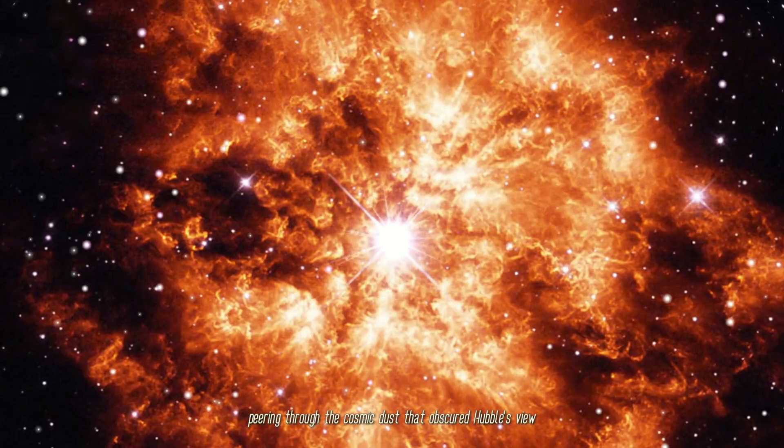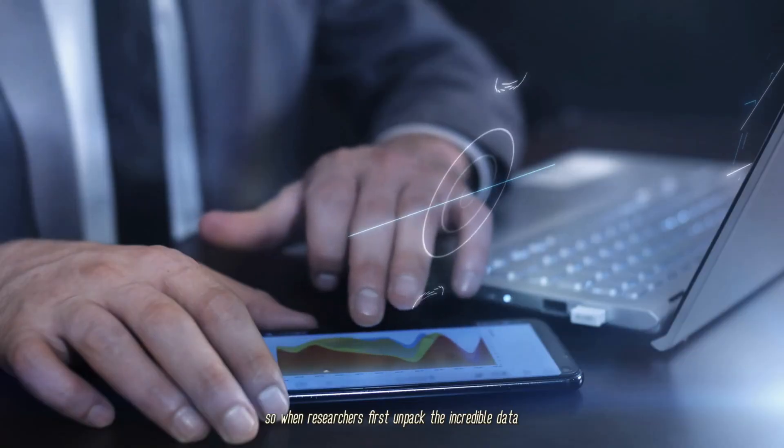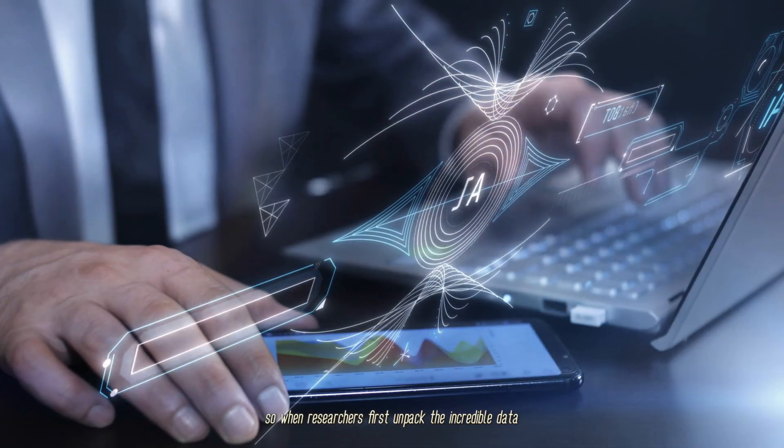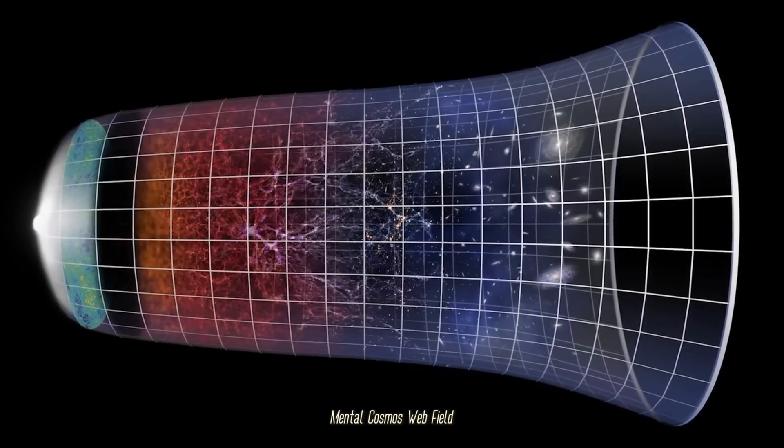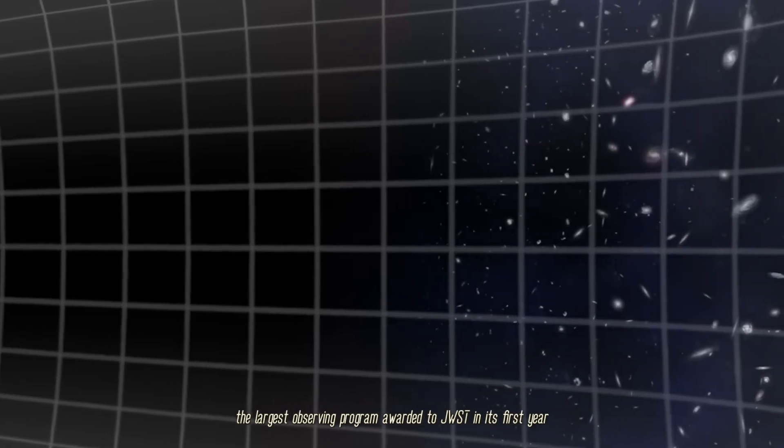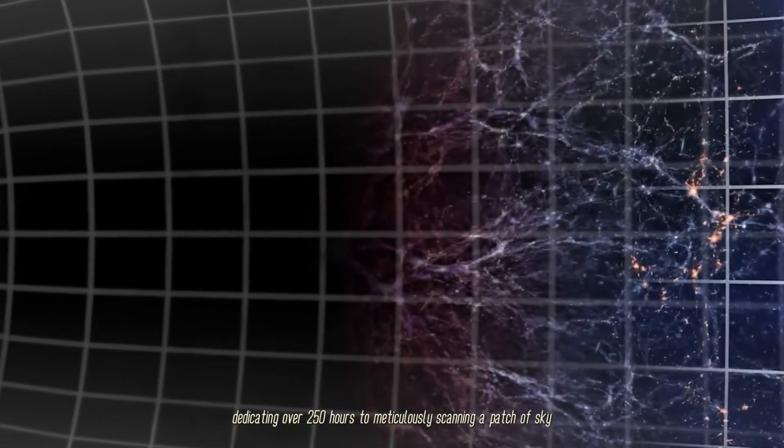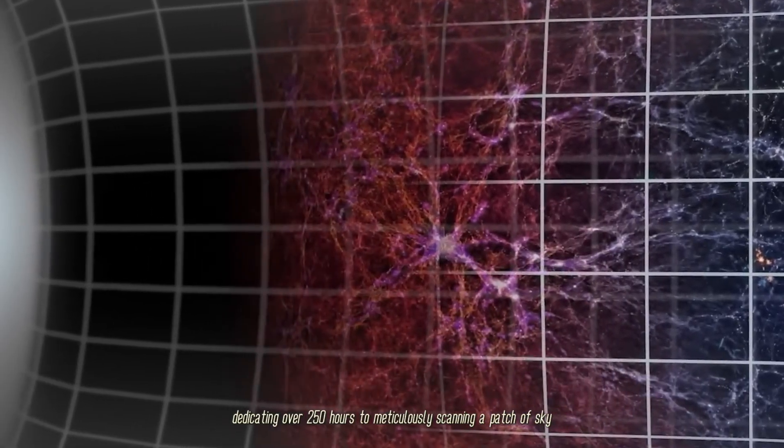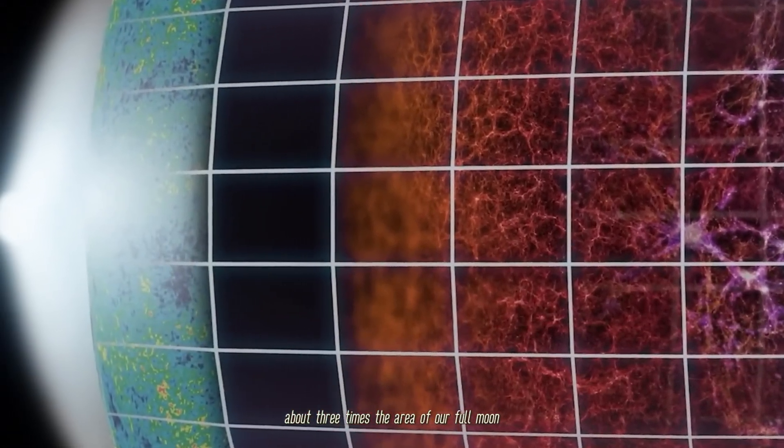When researchers first unpacked the incredible data from Webb's deepest surveys, like the monumental COSMOS-Web field—the largest observing program awarded to JWST in its first year, dedicating over 250 hours to meticulously scanning a patch of sky about three times the area of our full moon—they expected to find a handful, maybe a few dozen infant galaxies.